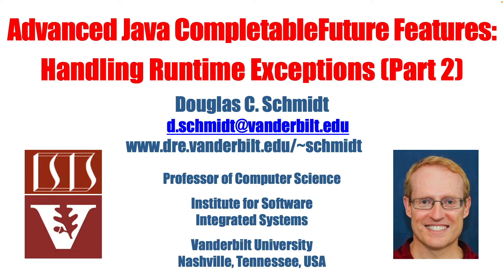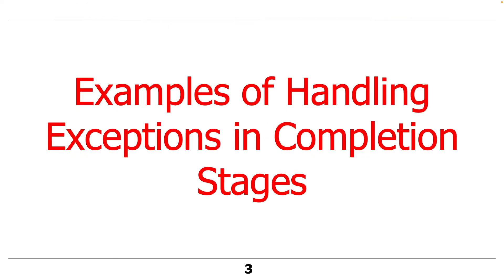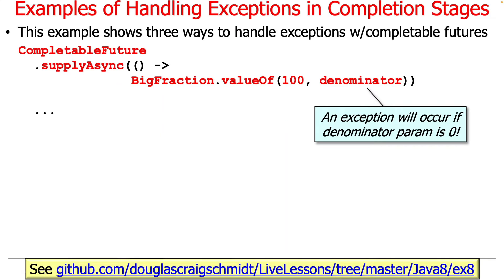So the final part of the discussion of completion stage methods will focus on an example for how to handle runtime exceptions. We'll take a look at a case study that will illustrate this. As usual, this case study is available in my GitHub repository, in the ex8 project, in the Java 8 folder, in my live lessons repository.